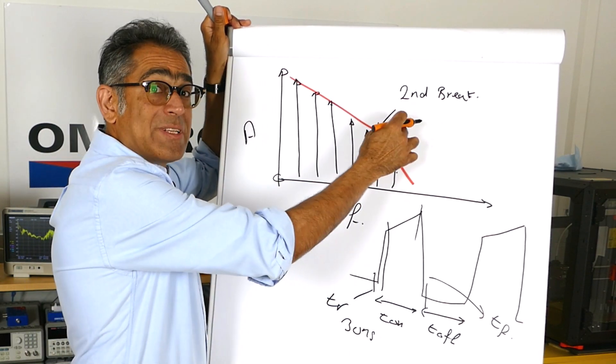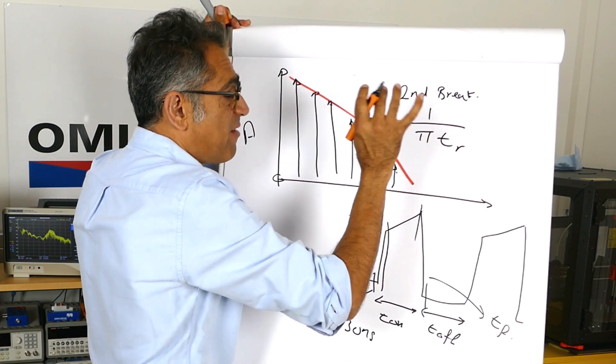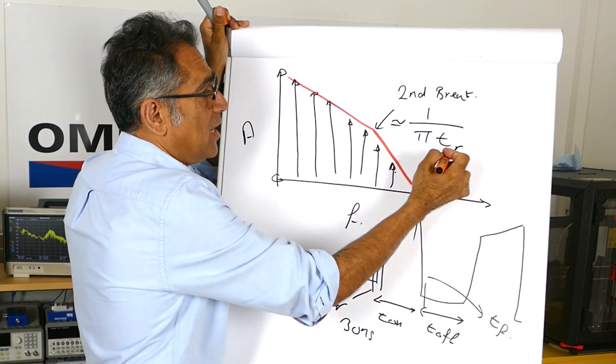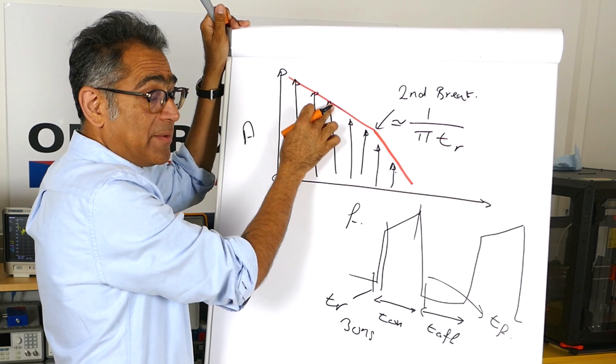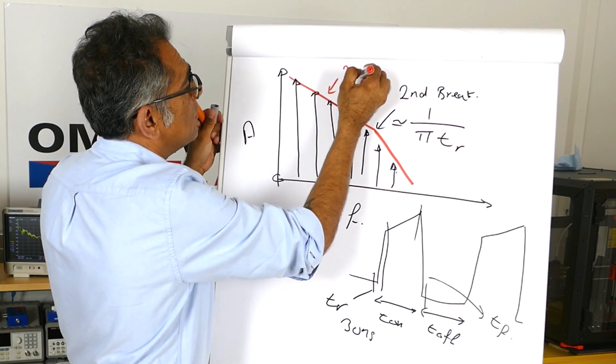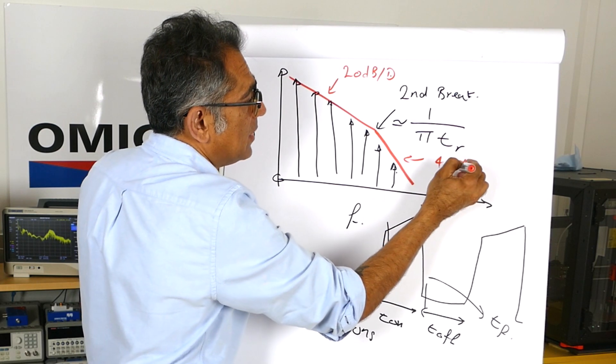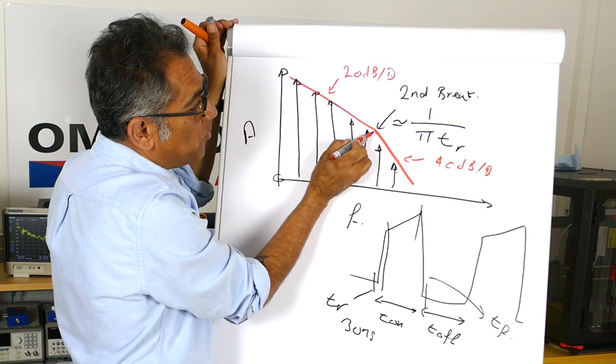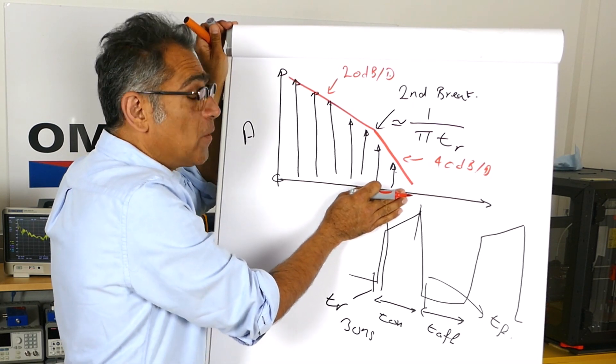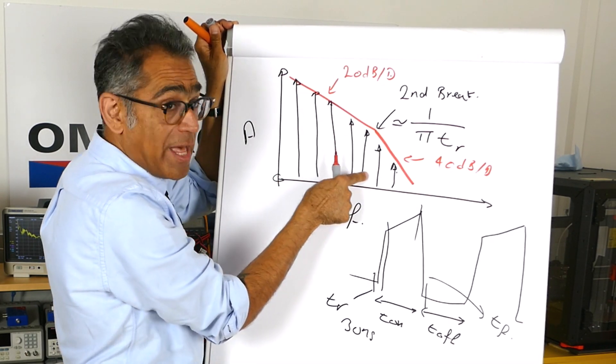This point happens to occur at 1 over pi TR approximately. And you can see that if you slow down your rise time, this is your TR, this point is going to move that way. This is going down at a rate of 20 dB per decade, and this one is going down at a rate of 40 dB per decade. So after this point, it's going to go down at the rate of 40 dB per decade. It follows therefore that if I slow this thing down, this is going to shift that way, and it's going to fall down faster.